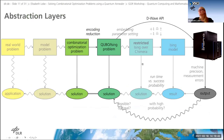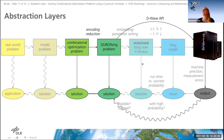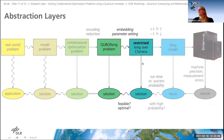We now have our QUBO and could use the D-Wave API to put our integer factorization problem on the machine. However, most likely you won't get the factors you want, because there are hidden steps inside the D-Wave API. I want to show you the restrictions the D-Wave machine inserts and the loops that still need to be closed.